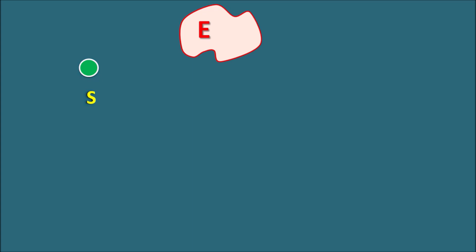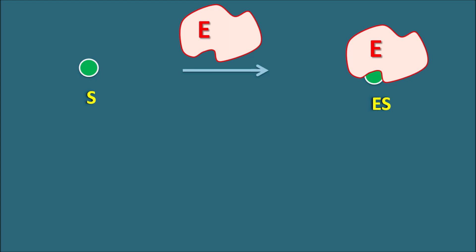Now the substrate has to bind to the enzyme in order to proceed the reaction. So the important step is the formation of the enzyme-substrate complex, indicated by ES. It can be converted into products, or it can be reconverted into substrate as well as the free enzyme. So the interaction between the substrate and enzyme is a reversible reaction.